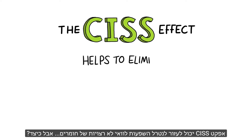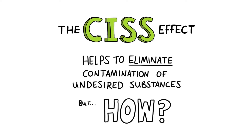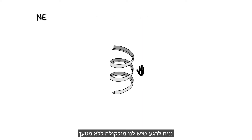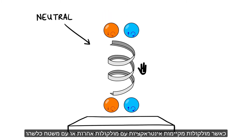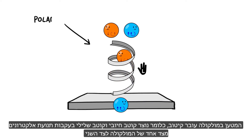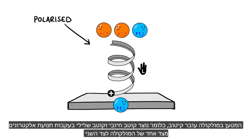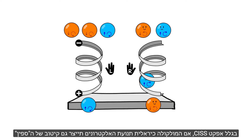The CISS Effect helps to eliminate contamination of undesired substances. But how? Let's assume that we start with a neutral molecule which doesn't have net charge. When molecules interact with other molecules or a surface, the charge in the molecule is polarised so that it has a positively charged pole and a negatively charged pole. This is done by moving electrons from one side of the molecule to the other. Because of the CISS Effect, if the molecule is chiral, the electron motion is accompanied by spin polarisation.